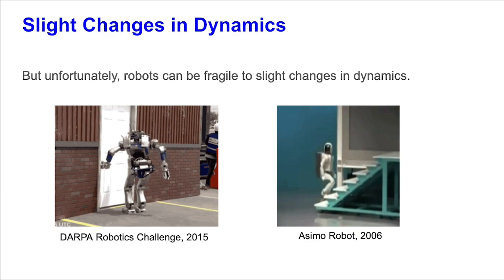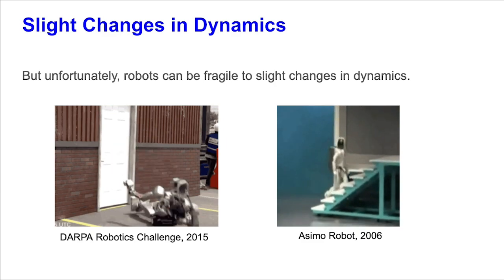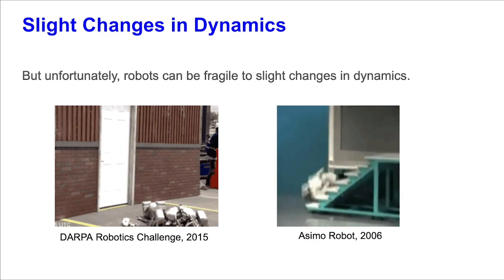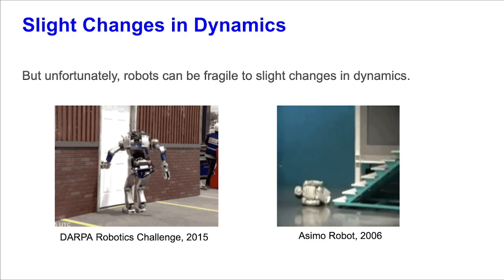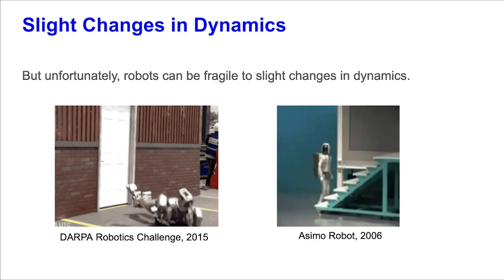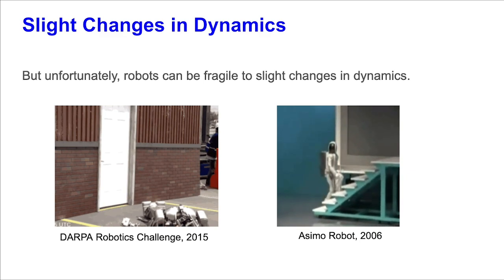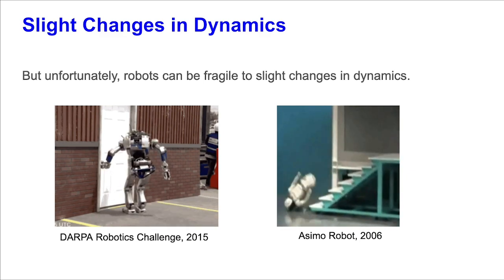But unfortunately, robots can be fragile to slight changes in dynamics. On the left, you can see a humanoid robot fail to open a door and fall down, while on the right you can see another humanoid fail to walk up a flight of stairs, both due to different test environments than the ones they were designed for.